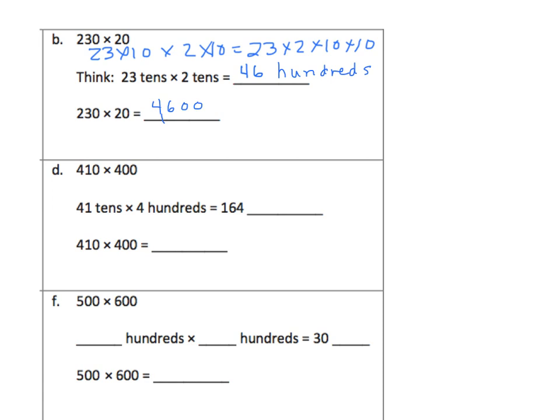In this case, we have 410, which is 41 tens, times 400, which is 4 hundreds. So again, we can decompose this and show our thinking. We have 41 times 10 times 4 times 100.